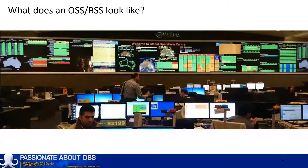In the background you can see an impressive video wall with data presented from a number of OSS and BSS. This one is approximately 25 meters wide by two and a half meters tall — quite a big chunk of visual real estate used by our OSS and BSS. The video walls of other NOCs can be even bigger.